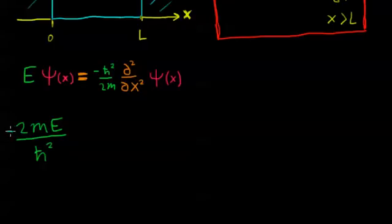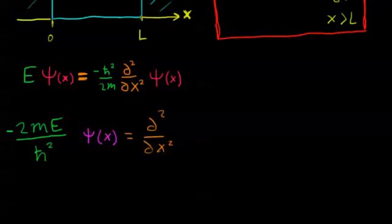Divided by h-bar squared, and the negative of that, times our wave function, is equal to the second derivative with respect to x of our wave function again.